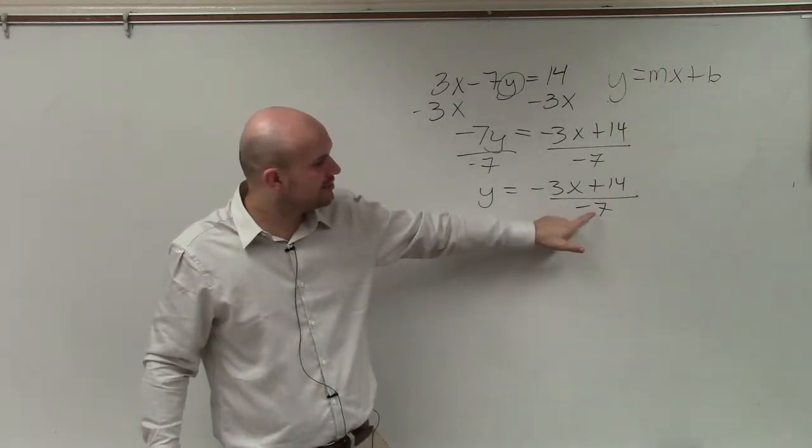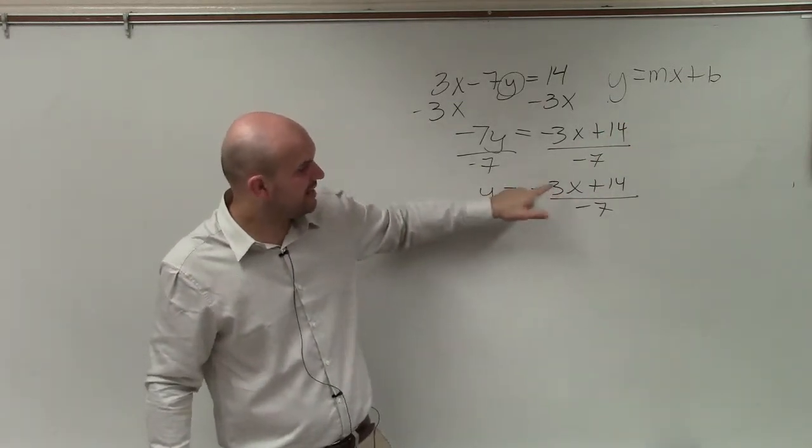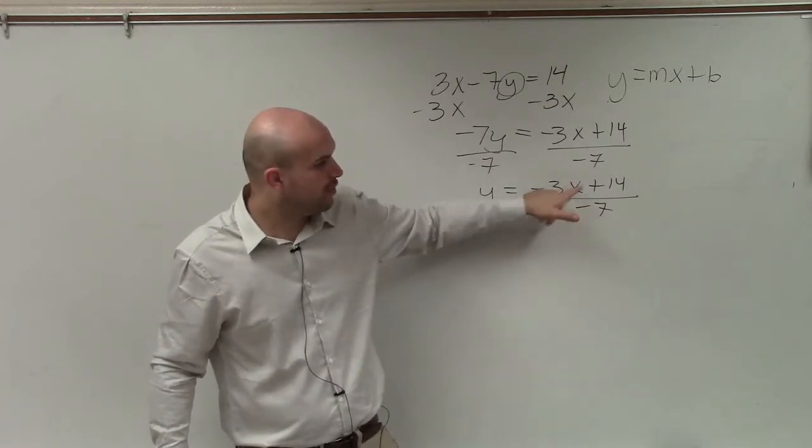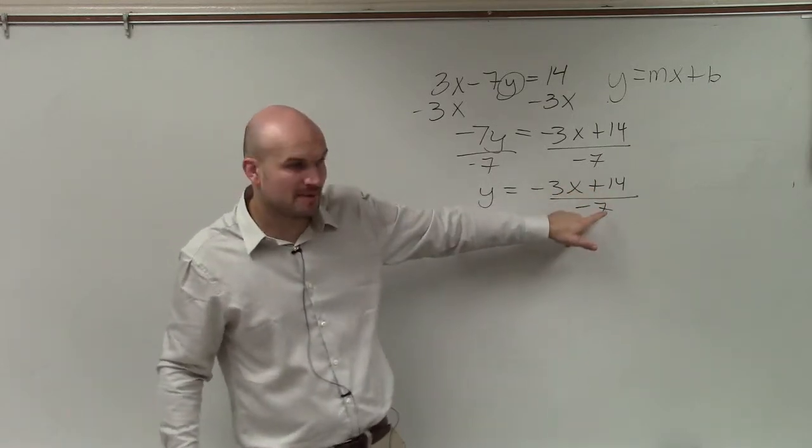So to do that, I got to understand that negative 3x plus 14 is being divided by negative 7. So therefore, both of these terms, I have to divide by negative 7.